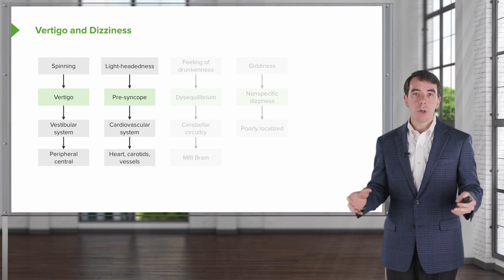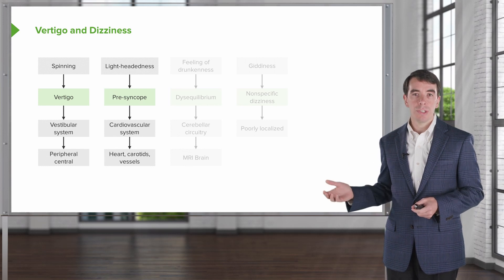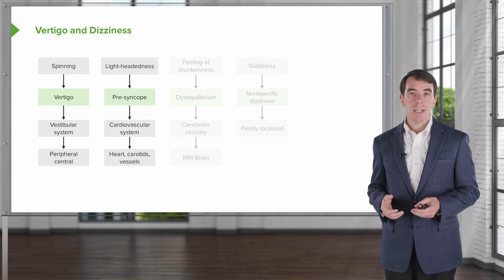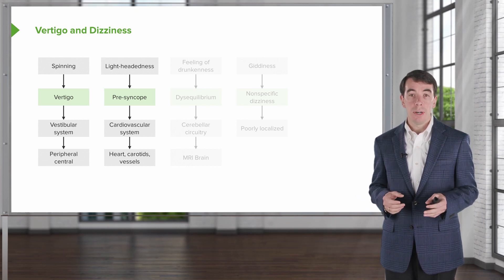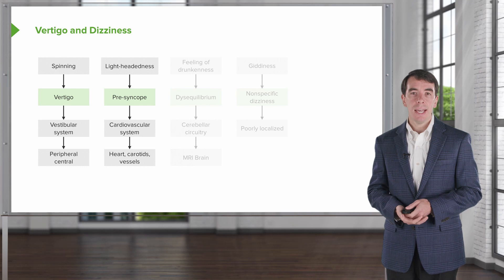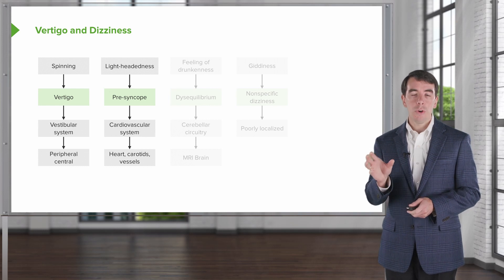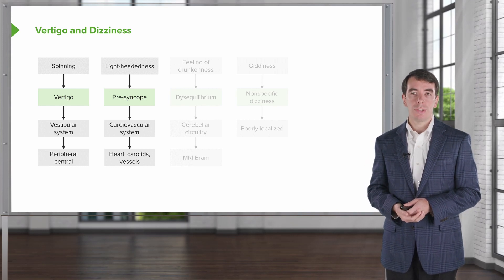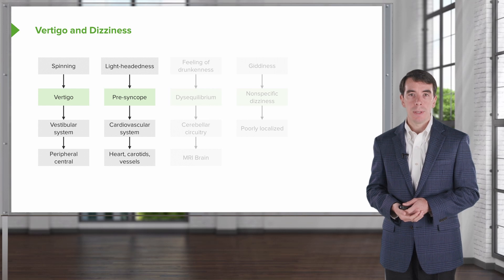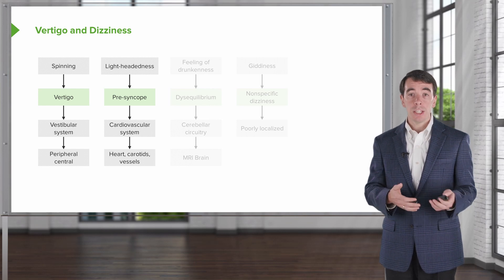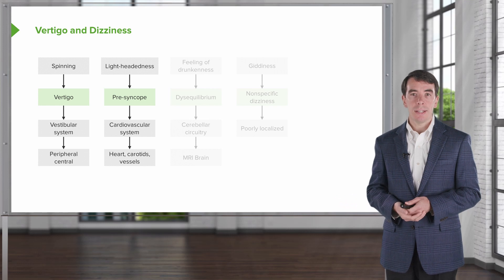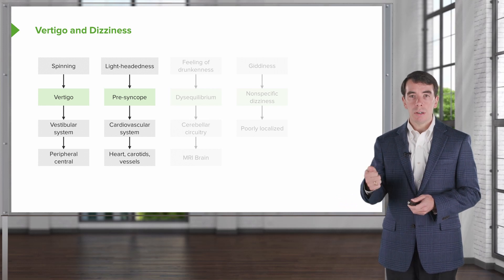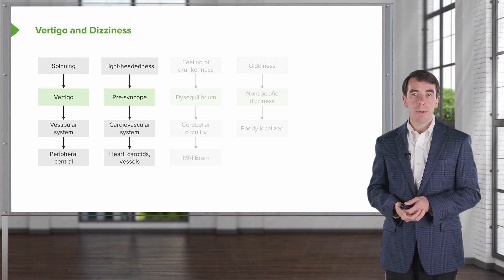The second broad category of dizziness is presyncope or syncope. Patients will describe this as a woozy feeling, being swimmy-headed, or fainting, and that lightheadedness description should focus our evaluation on presyncope or syncope. Presyncope and syncope come from the cardiovascular system, so our diagnostic investigation targets the heart, the carotid vessels or other blood vessels, or low blood pressure.